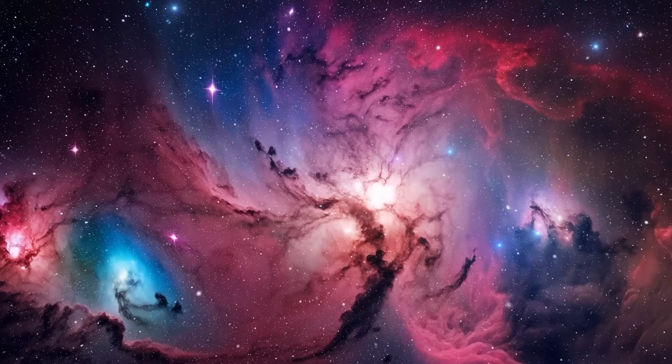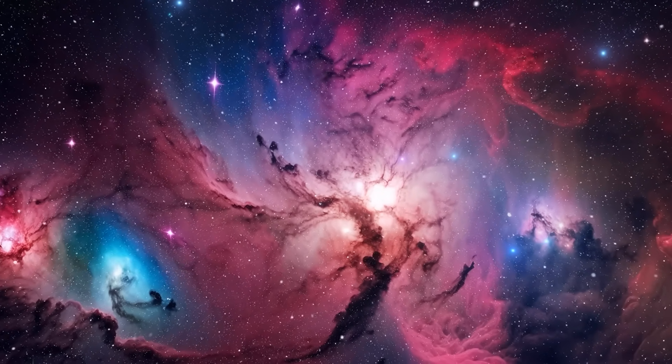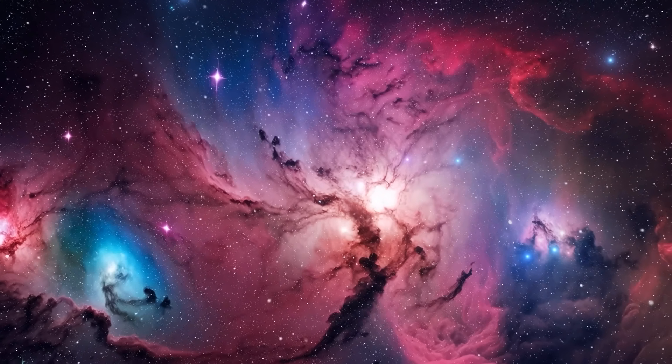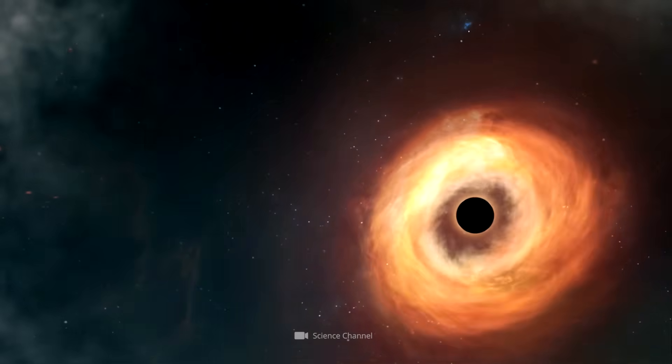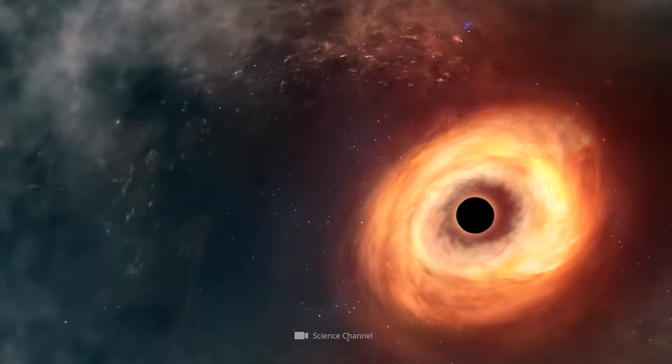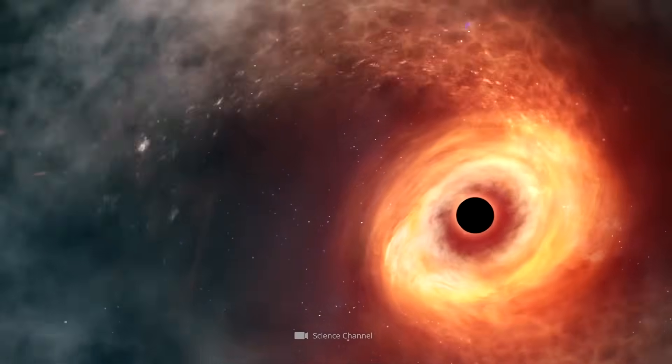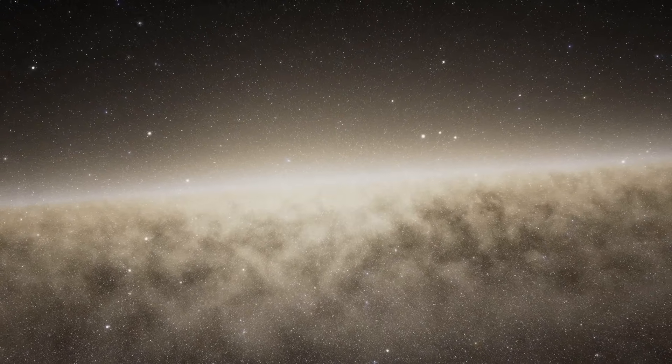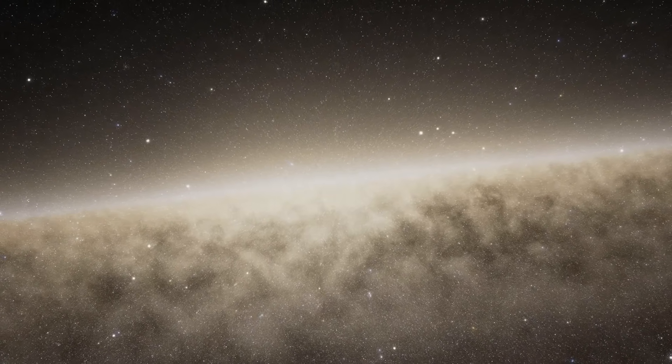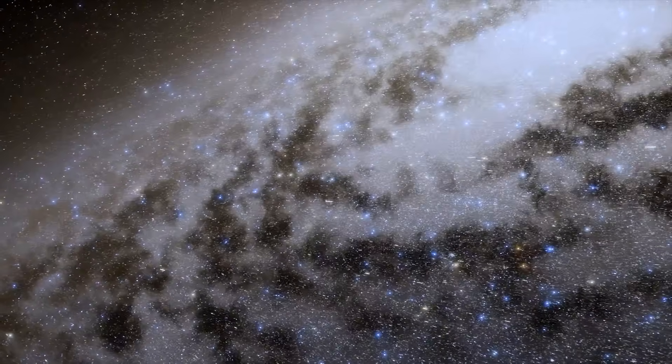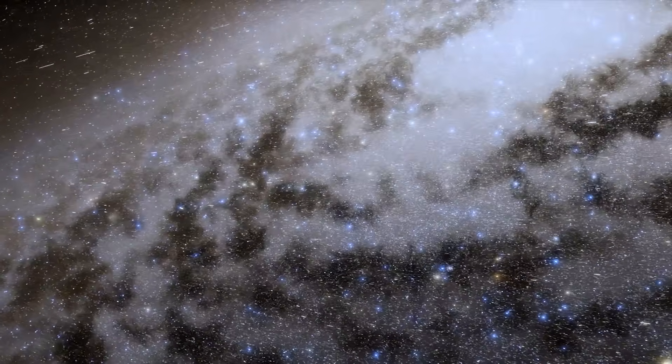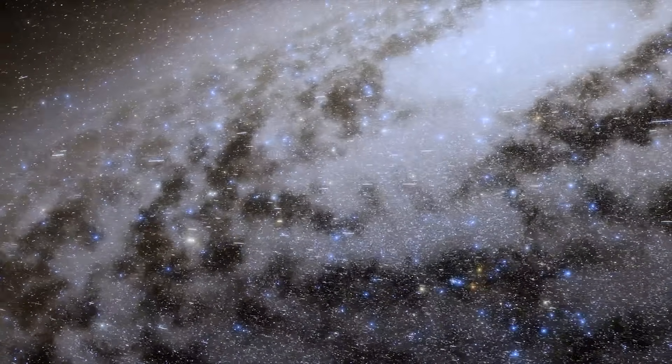The idea is both crazy and fascinating at the same time. It's based on the fact that space-time around black holes is extremely distorted, which may create the conditions for a stable wormhole to form. If such structures exist, they could not only completely change our picture of the universe but also explain how matter and energy are transferred between distant regions of the cosmos.